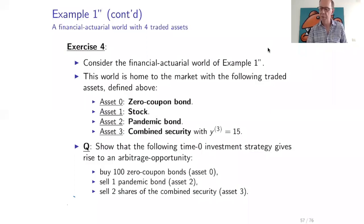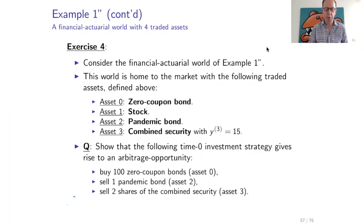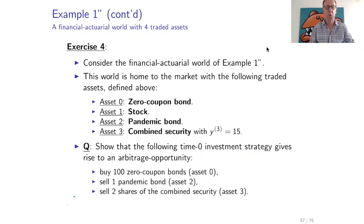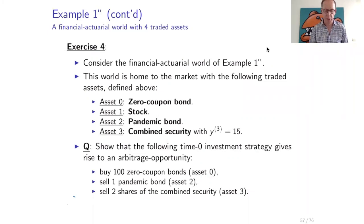Welcome to video five of financial valuation. We will start by making some exercises related to example one double prime of the previous video, which is related to securitization and in particular to pandemic bonds. After that we will go to example two, which is also an example of securitization but related to longevity risk.